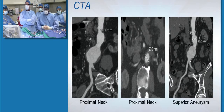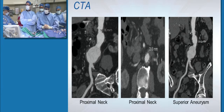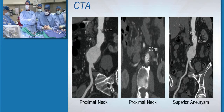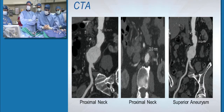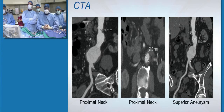A couple of curvilinear reformatted images showing a short proximal neck. You can see that bilobed configuration to a little bit better advantage. And then some images of the proximal neck and the superior aneurysm.